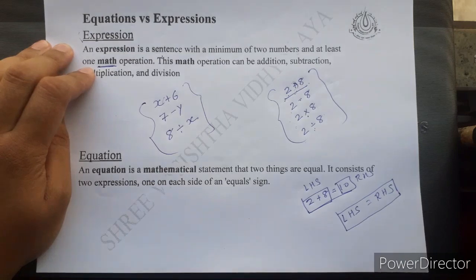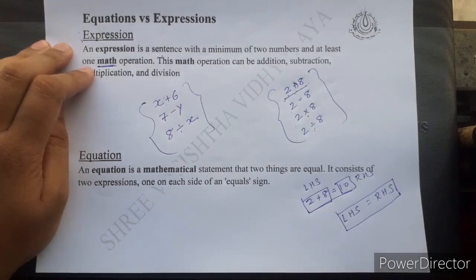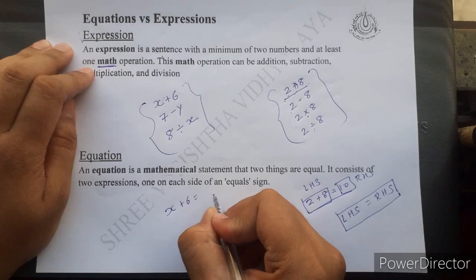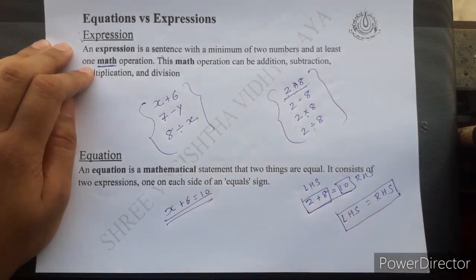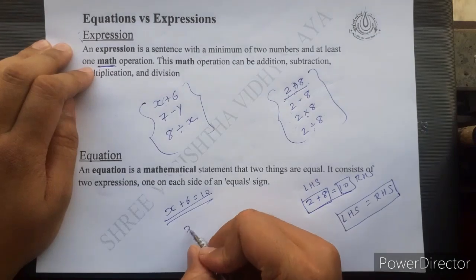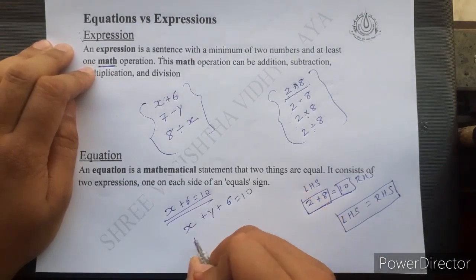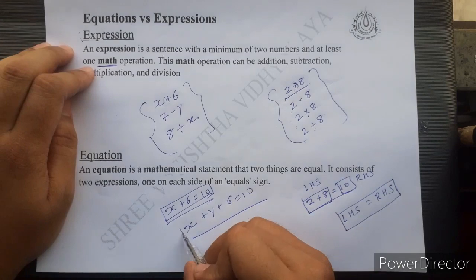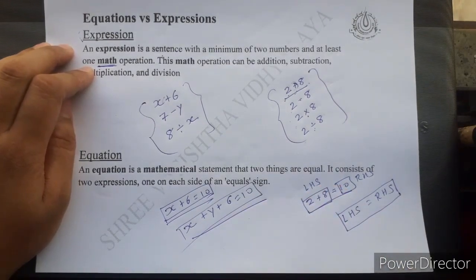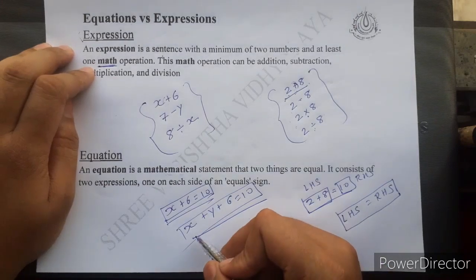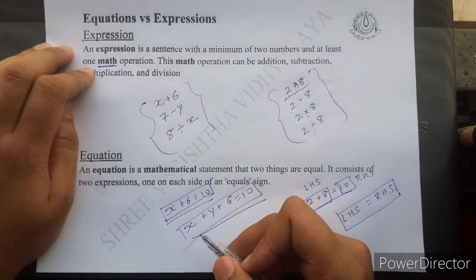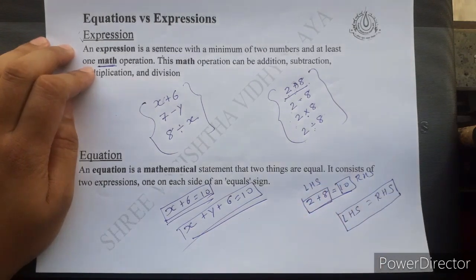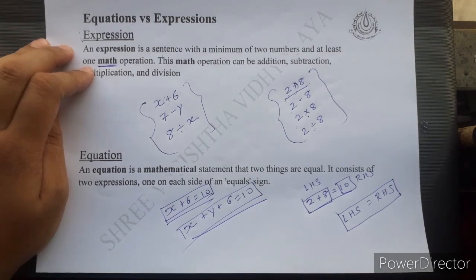An equation is a mathematical statement that two things are equal. For example, x plus 6 equals 10 — this is one type of equation. We can also write x plus y plus 6 equals 10 — this is also an equation. But the first is a linear equation in one variable, and the second is a linear equation in two variables, because we are using two different alphabets x and y.